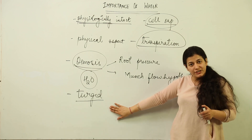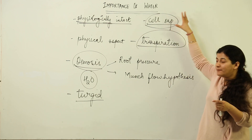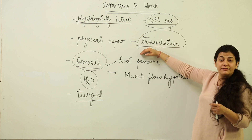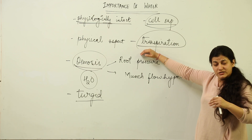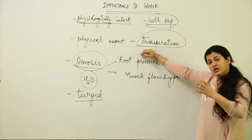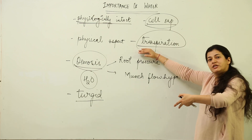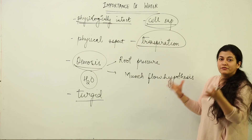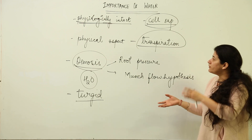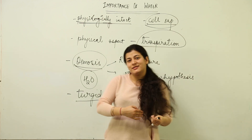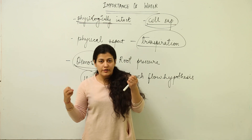Water is responsible for maintaining the turgidity in the cells, for making the cell sap inside the plant cell, and for carrying out the activity of transpiration where the plants are able to get rid of water. This is a completely physical process. Because of this transpiration, there is absorption taking place, and because of the absorption, the plant cells are able to maintain whatever water requirement they need. A few of these importances have been studied prior to this lesson, and after this lesson we are going to see the further importance.